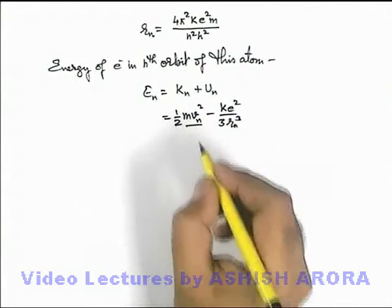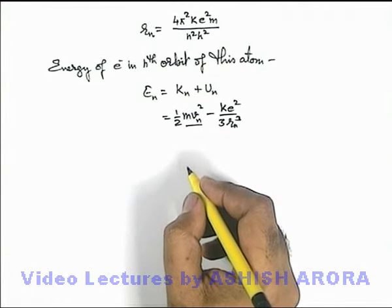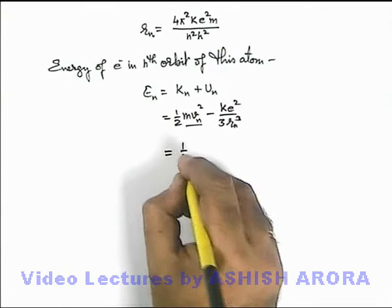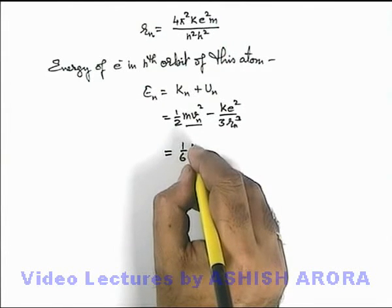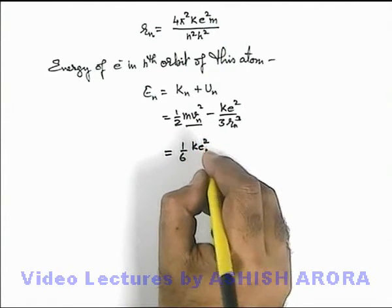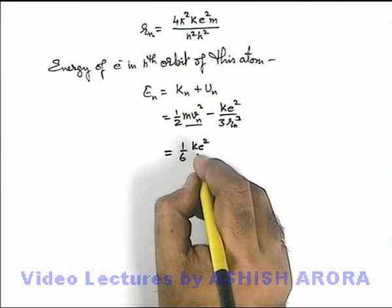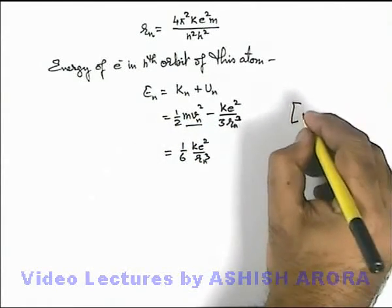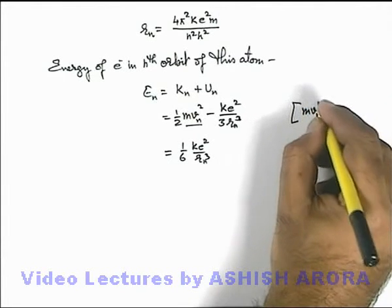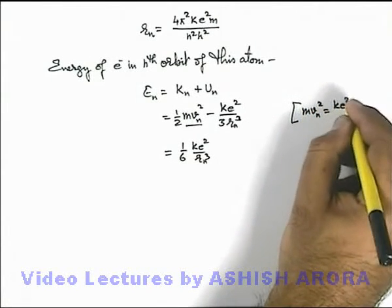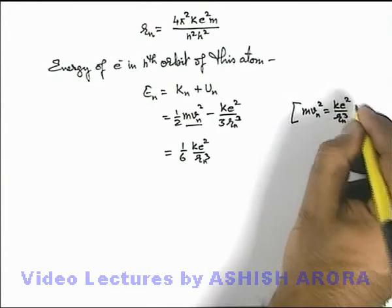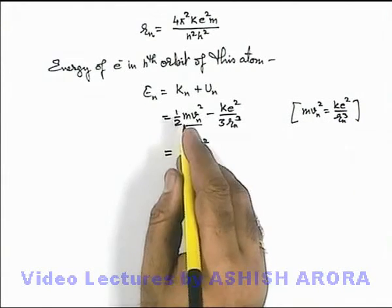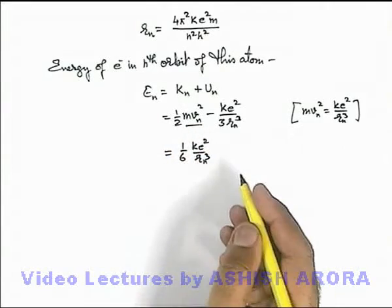Now the value of m v n square we already obtained in equation 1. We can substitute, so this gives us 1 by 6 k e square over r n cube. I have directly used m v n square equals k e square by r n cube, which was our equation 1 on the previous sheet, so here 1 by 2 minus 1 by 3 will be 1 by 6.